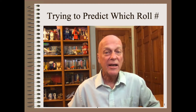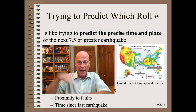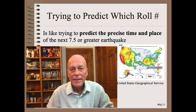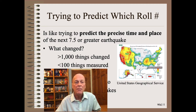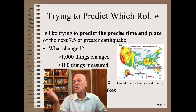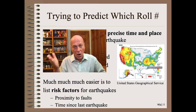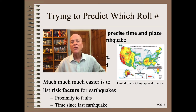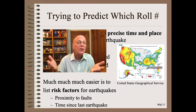Predicting which single roll will fail at the customer is like trying to predict the precise time and place of the next 7.5 or greater magnitude earthquake. Thousands of things change and far less than hundreds, perhaps even less than 10, are actually measured. Much easier is to list the risk factors for earthquakes — there are only two big ones: proximity to a known fault line and time since the last notable quake. We are going to use this much more tractable and practical approach for common web problems.